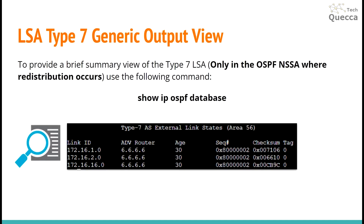To briefly review information about Type 7 LSAs, you can use the command 'show ip ospf database'. Under the Type 7 AS External Link States section you can see the LSAs — these are for networks 16.1, 16.2, and 16.16 — along with the advertising router, age, sequence number, and checksum.